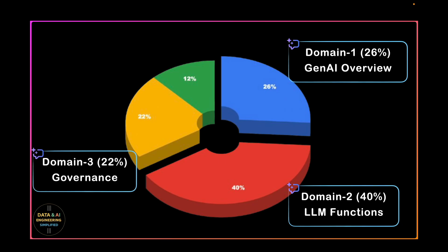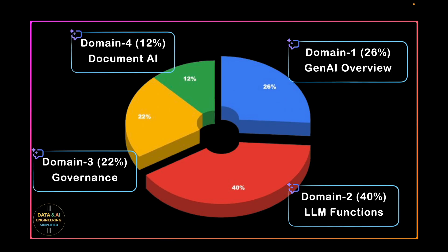Domain 3 is Snowflake Gen AI Governance with 22% weightage. This domain covers all the governance and access control features including guardrails, hallucination, biases, monitoring, and AI observability features. Domain 4 is Snowflake DocAI with 12% weightage, covering intelligent document processing from setup to querying to debugging. The golden rule: Domains 1 and 2 cover 66% of your overall syllabus, so focus most of your effort there to increase your success rate.